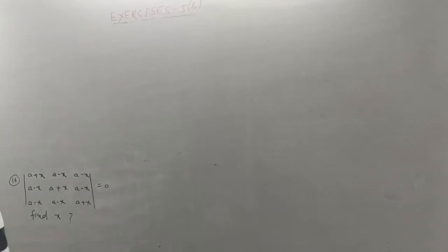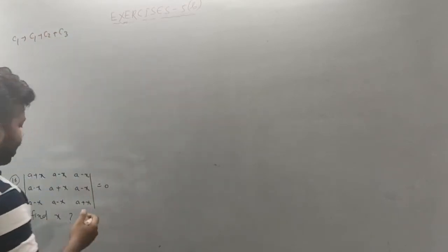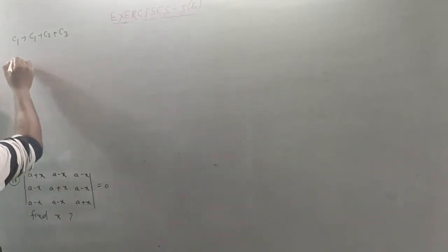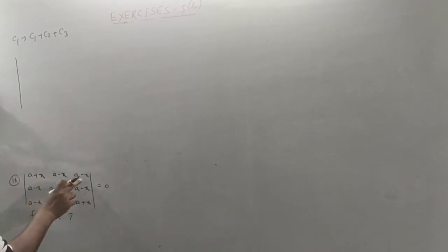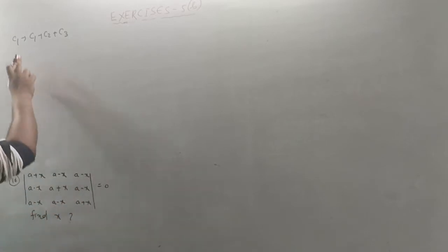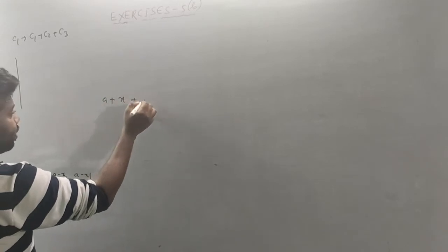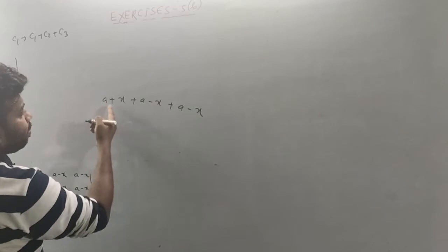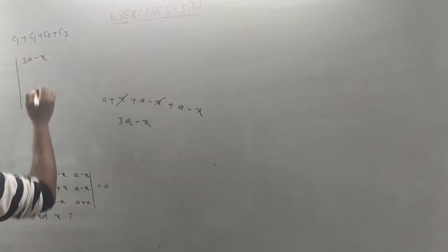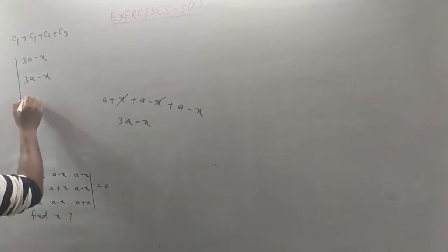Here find x and then let's see what property is called: C1 to C1 plus C2 plus C3. Apply that property. So after that we will have a plus a plus a plus x equal to 3a plus x. So we can write the common factor 3a plus x.